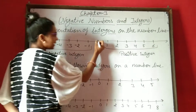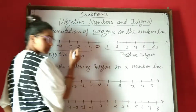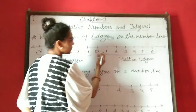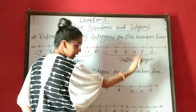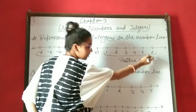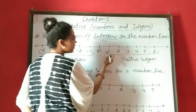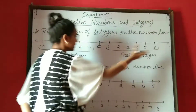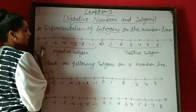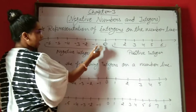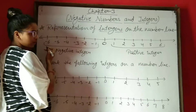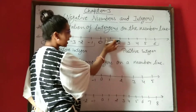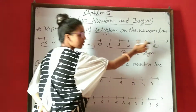Center में आप zero put करोगे. Zero is not an integer. Zero put करने के बाद में, उसके right side में आप positive integer की value put करोगे — 1, 2, 3, 4, 5, 6 — infinity तक. Then left side में negative value put करोगे. और यह जो आपका distance होगा, unit distance, यह आपका same होना चाहिए.